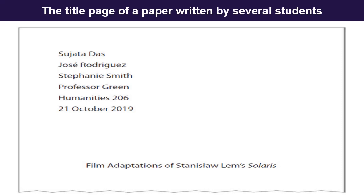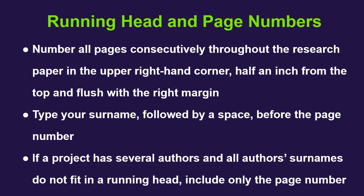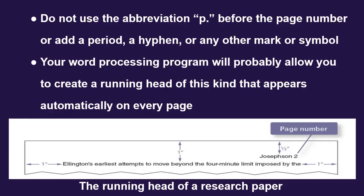The next one is running head and page numbers. Number all pages consecutively throughout the research paper in the upper right-hand corner, half an inch from the top and flush with the right margin. Type your surname followed by a space before the page number. If a project has several authors and all authors' surnames do not fit in the running head, include only the page number. Do not use the abbreviation p. before the page number or add a period, hyphen, or any other mark or symbol. Your word processing program will probably allow you to create a running head that appears automatically on every page. This picture shows us how to write the page number and running head of a research paper.